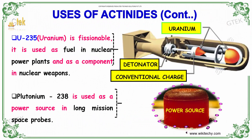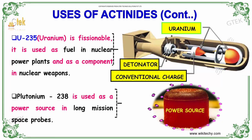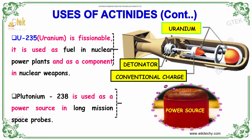Now let's talk about the uses of actinides. Actinides have many uses because they are radioactive elements. Uranium-235 is fissionable and is used as fuel in nuclear power plants and as a component in nuclear weapons. Plutonium-238 is used as a power source in long-mission space probes.